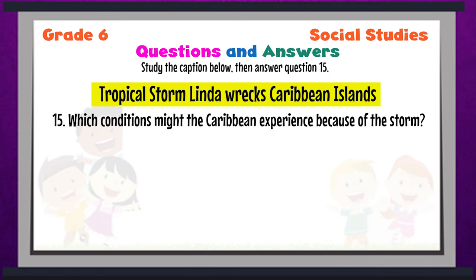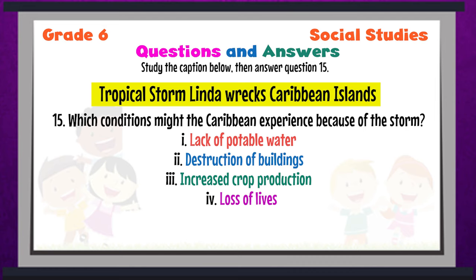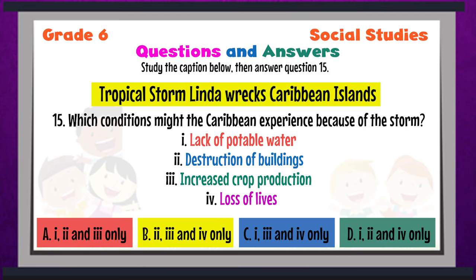Question 15: Study the caption — which conditions the Caribbean may have experienced because of this term? Items 1, 2, 3, and 4 are listed. At A, there is a combination of 1, 2, and 3; at B, a combination of 2, 3, and 4; at C, a combination of 1, 3, and 4. Write the letter that you think has the correct answer for question 15.